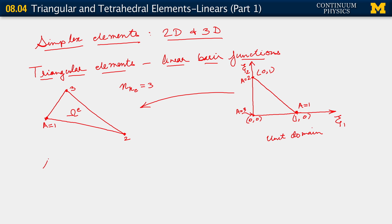We have three basis functions. Although we have a two-dimensional domain and truly need only two coordinates, we do go ahead and define a third coordinate. We define C3, which is simply 1 minus C1 minus C2. One doesn't really need to do it and can work without it, but once one does this, the definition of basis functions becomes very convenient.